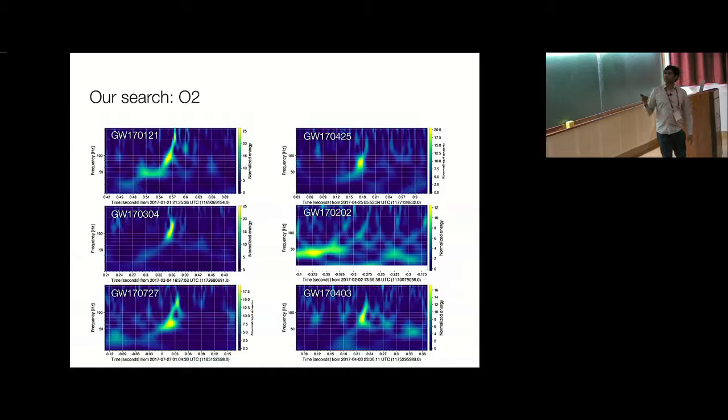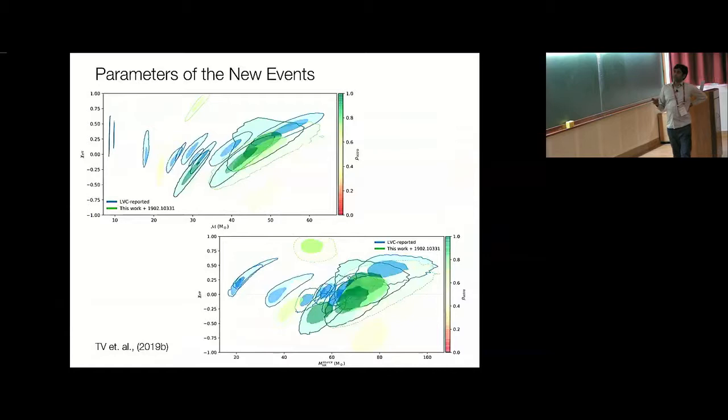These are the spectrograms of the six new events that we found in O2 above the detection thresholds. These are the parameters. This is in the space of detector frame chirp mass and the so-called effective spin parameter. The blue posteriors are those of the events in the LIGO catalog, and the other ones are the ones that we report with a range of P-astro. These are the ones for which our confidence in them is similar to GW 170729. The most interesting one, this is the same thing in the space of the source frame masses. The most interesting one I would say is this one which was found in O1, the trigger in O1.